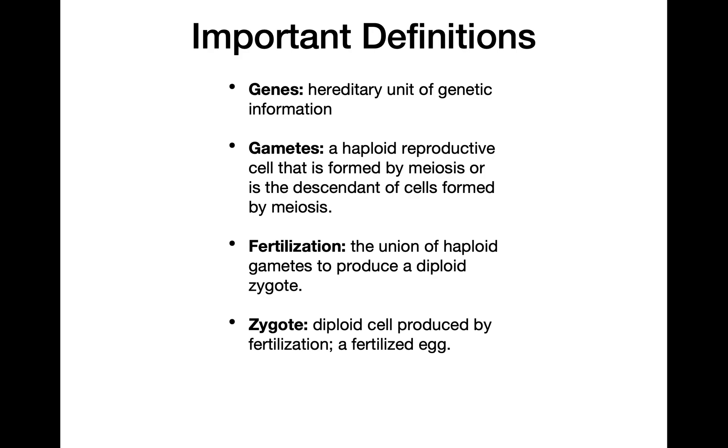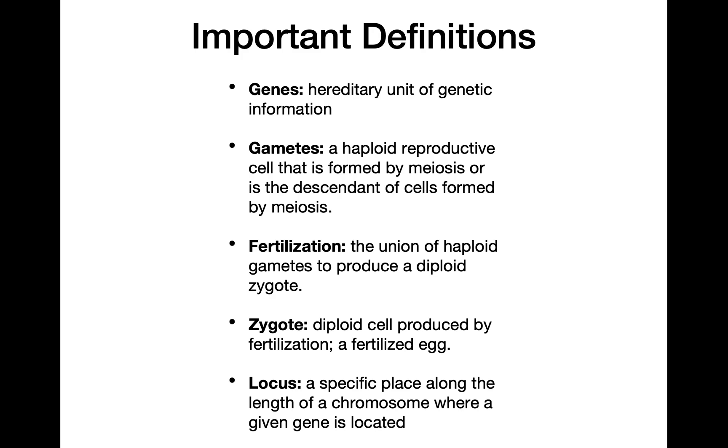Lastly, we have a locus — a specific place along a chromosome where a particular gene is going to be found.